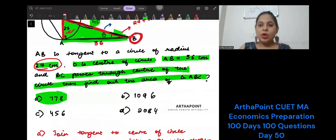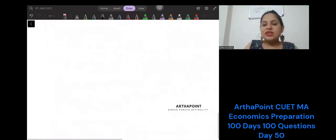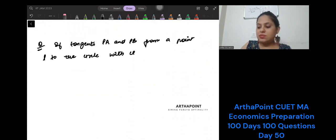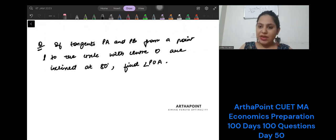Now, on similar lines, note down the question of the day. If tangent PA and PB from a point P to the circle with center O are inclined at 80 degrees, find angle POA.